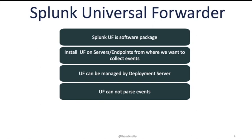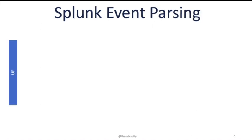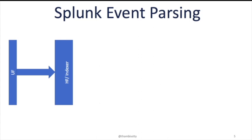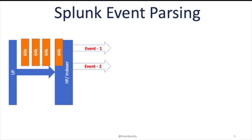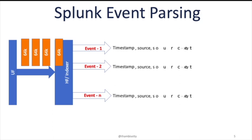UF cannot parse events. Let's understand what is event parsing. While UF reads the data stream from its source, it breaks it into 64K blocks. Breaking the stream of data into individual lines is one of the features of event parsing. Identifying the timestamp of each event happens at the time of parsing only — timestamp is crucial for each event in Splunk because events are indexed with their timestamps. Adding meta fields — source, source type, and host — to each event also happens at the time of event parsing. UF is not capable of parsing events, but Heavy Forwarder is capable.